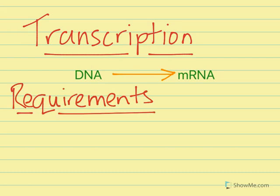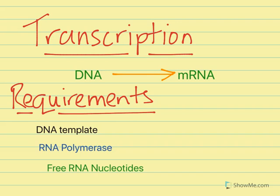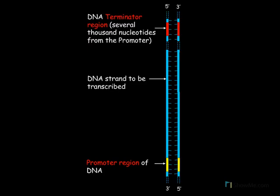What are the requirements of transcription? First, we have our DNA template, which is the gene to be transcribed. We need the enzyme responsible, which is RNA polymerase. We need a supply of free RNA nucleotides — adenine, uracil, guanine, and cytosine. And once again, a supply of ATP to provide the chemical energy to stitch those nucleotides together in the growing RNA strand.